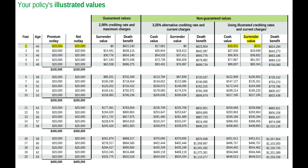In year one, you would receive $315 if you decided to cancel your policy. The accumulation value equals the amount of all the premiums you paid, minus administrative charges, monthly deductions, and any withdrawals, plus the accumulated interest.